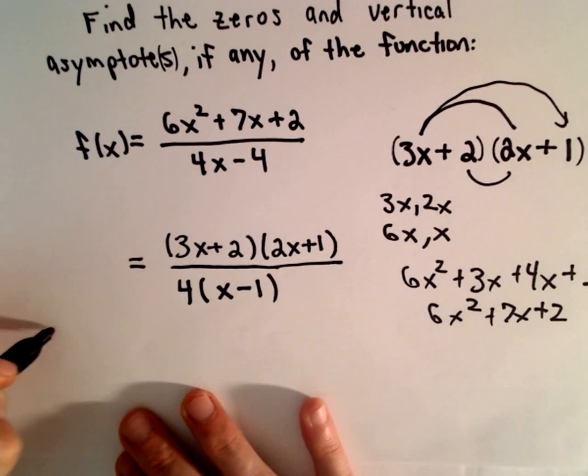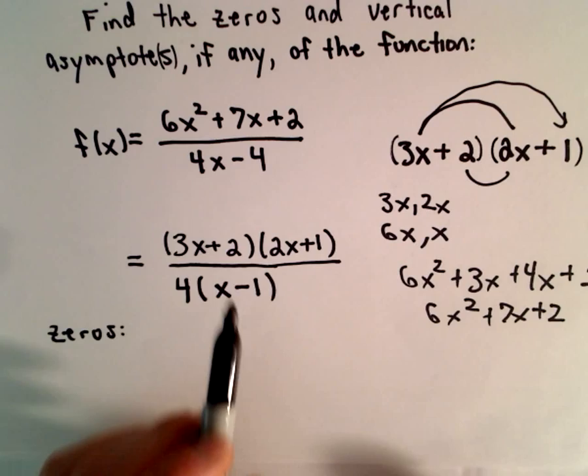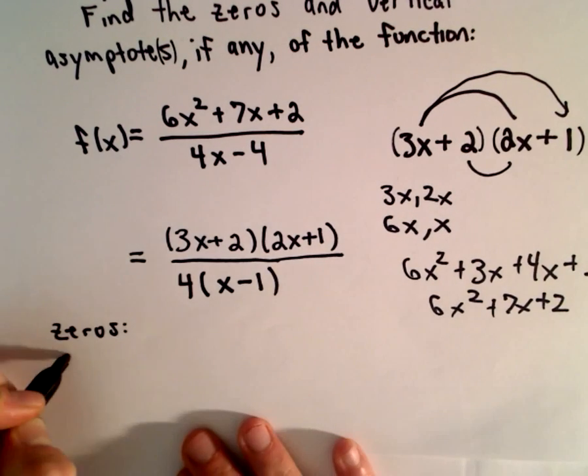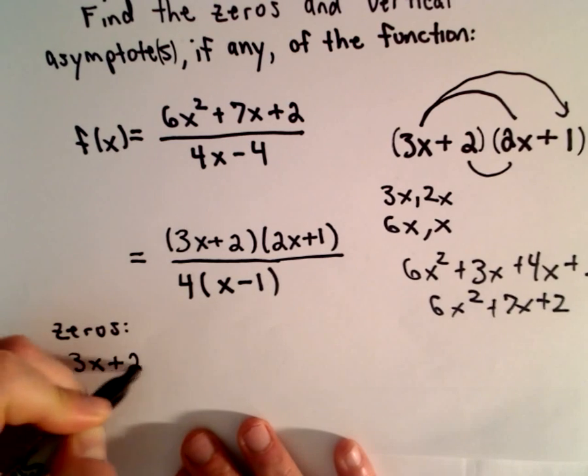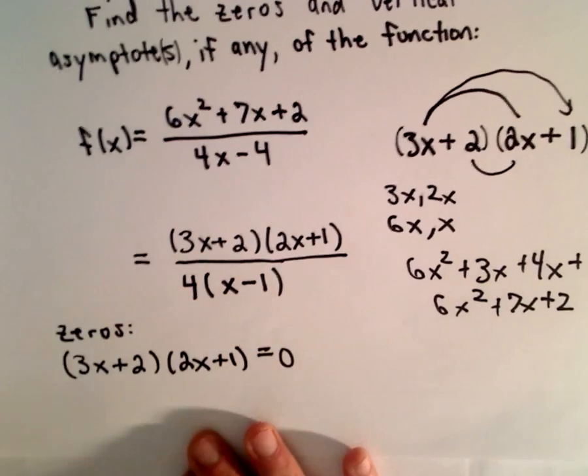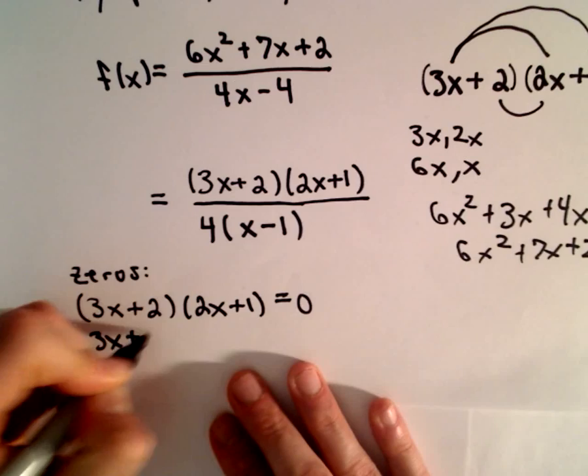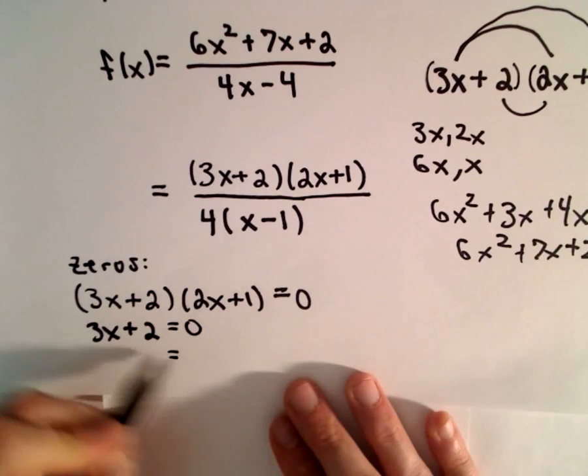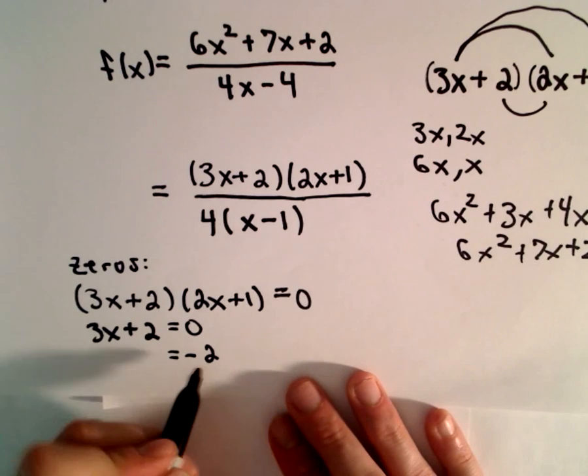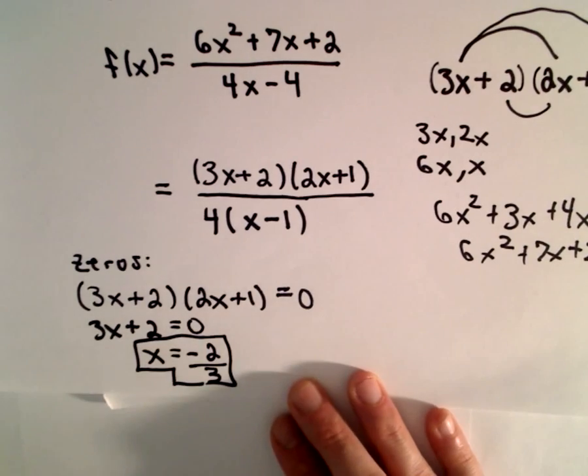Okay, so to find the zeros, first off, notice that there's no common factors. There's no factor in the numerator that's also in the denominator. So, in this case, to find the zeros, I'm going to take the numerator and set it equal to 0. Then, I'm going to set each factor equal to 0 and solve. So we have 3x + 2 = 0. We could subtract 2 from both sides. We would have 3x = -2. And then divide by 3 to get x = -2/3.